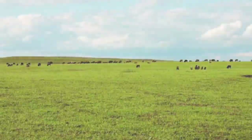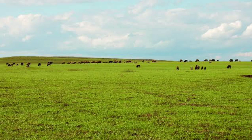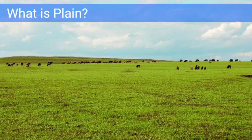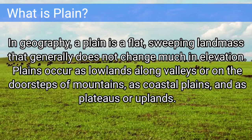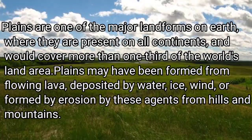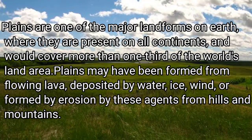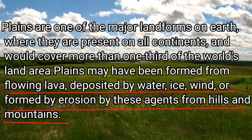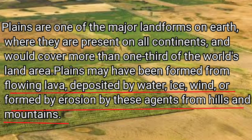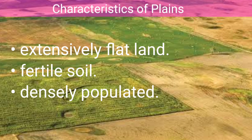The next landform we are going to discuss is plains. A plain in geography is a flat, sweeping landmass that generally does not change much in elevation. It can occur at the doorsteps of mountains, along the valleys, along the coastal plains, or at the top of plateaus or uplands. Plains are one of the major landmasses on earth because they cover almost one-third of the world's land area. They can be formed by deposition of flowing lava, or deposited by water, ice, or wind, or by erosion from hills and mountains.